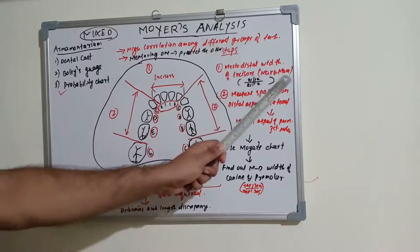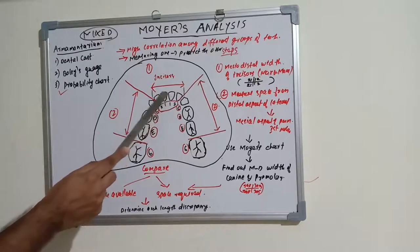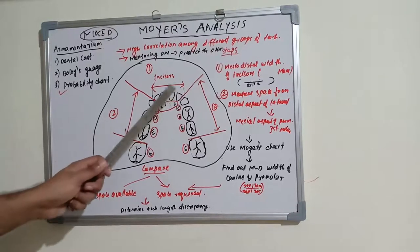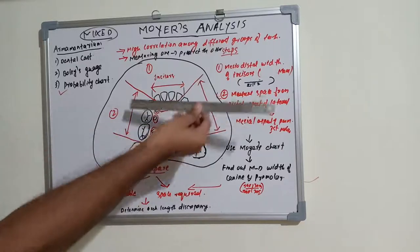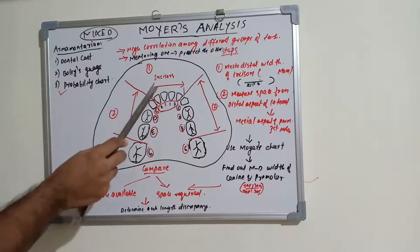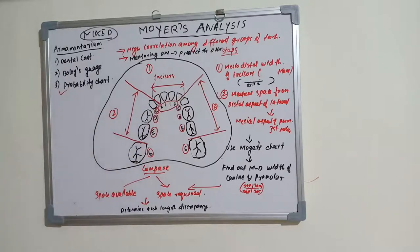Most commonly we use the mandibular arch — teeth 1, 2, 1, 2 — and measure their mesiodistal dimension. The lower incisors' mesiodistal width is measured on the cast using a Willis gauge — the mesiodistal width of all four lower incisors.